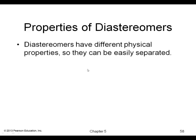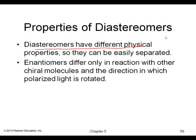Remember the definitions: constitutional or structural isomers, and stereoisomers, which break down into diastereomers and enantiomers. Diastereomers, unlike enantiomers, do have different physical properties and so can be separated.